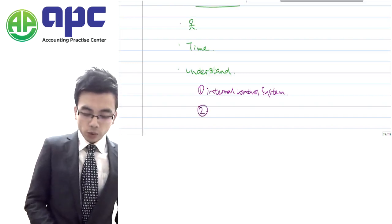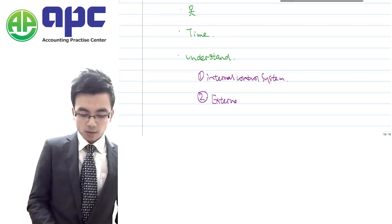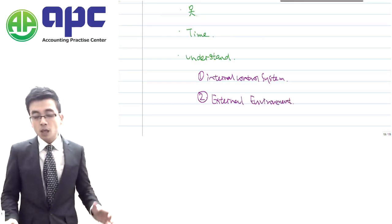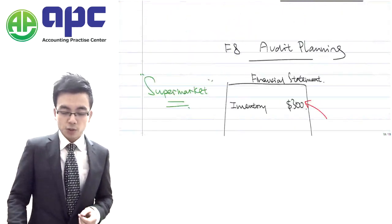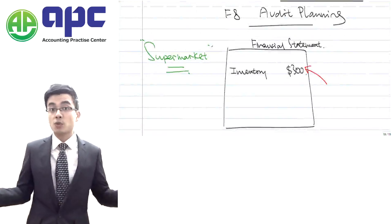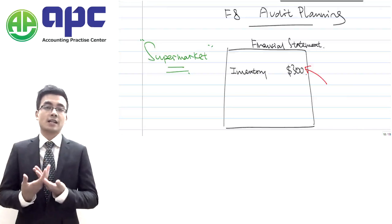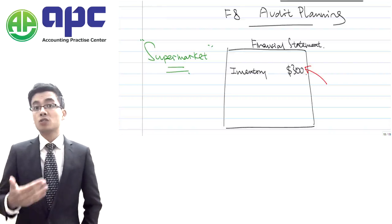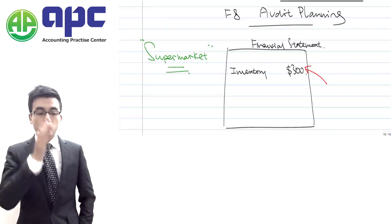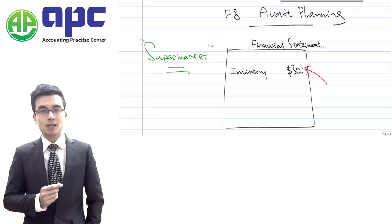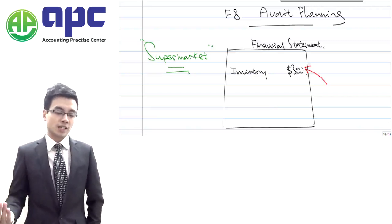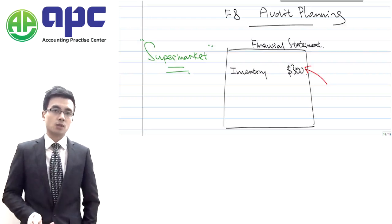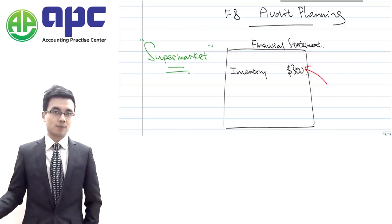Secondly, we need to understand the external environment that the business is facing. For example, within the supermarkets, the external environment includes facing competitors such as Walmart within the marketplace. As a result, because these supermarkets are listed and want to attract investment from shareholders, what they tend to do is try to manipulate the profit. How can they do that? Well, instead of using the weighted average method, they might change that to FIFO without giving any explanation to the auditor. But is that acceptable?